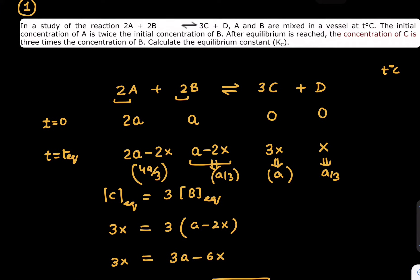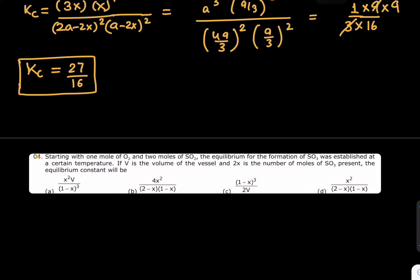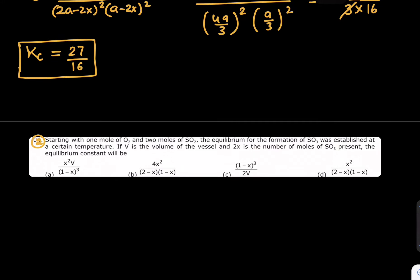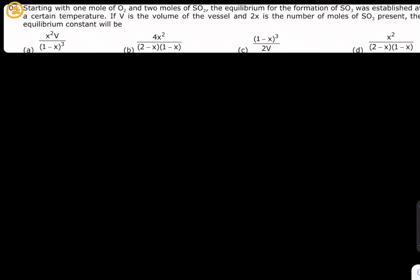What is the approach to such questions is very clear. Whatever they are telling, we are just doing it and logically getting the answer. Question number 2 in the same sequence: starting with 1 mole of oxygen and 2 moles of sulfur dioxide. Let's write down the statement. The equilibrium for the formation of SO₃ was established at a certain temperature.